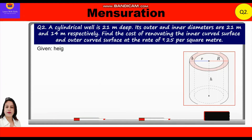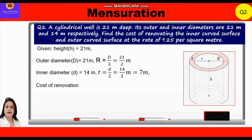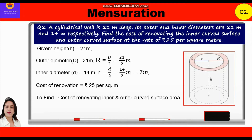Given: height = 21 meters, outer diameter = 21 meters, so outer radius = 21/2 meters. Inner diameter = 14 meters, so inner radius = 7 meters. The cost of renovation is rupees 25 per square meter. We need to find the cost of renovating the inner and outer curved surface areas.